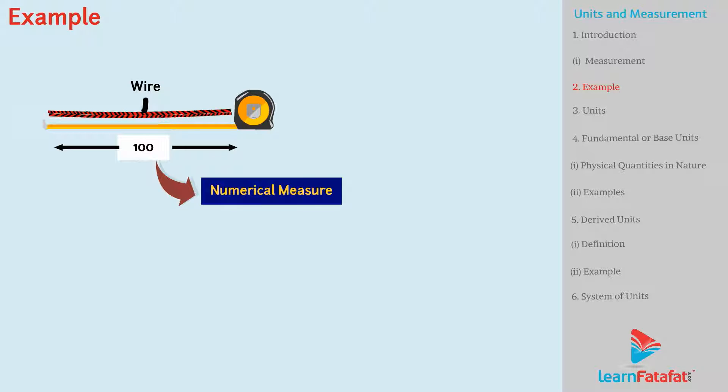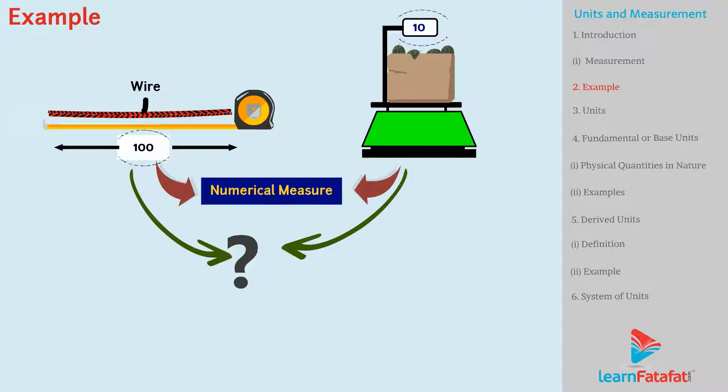Now, consider that a weighing machine also gives some numerical value. Then, how can you differentiate between the two numerical measures? Here comes the term unit. A unit differentiates between the physical quantities.